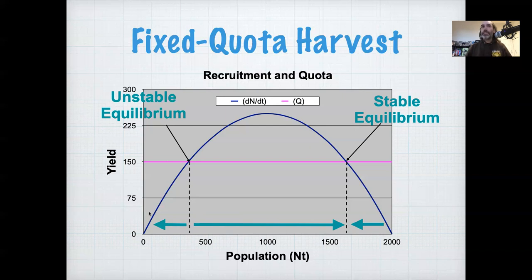So that's the fixed quota system. It has some clear disadvantages. You can imagine, we'll come back to this later, the disadvantages are exacerbated when you acknowledge that there's going to be uncertainty in the growth curve. In any real model, this is estimated with uncertainty, and there's going to be uncertainty not with what you set the quota to be, but with what was actually reported. So that's another thing to keep in mind with all these harvest systems.